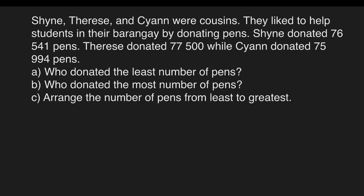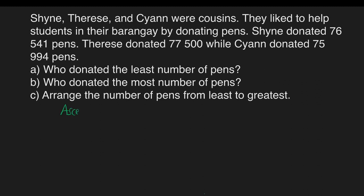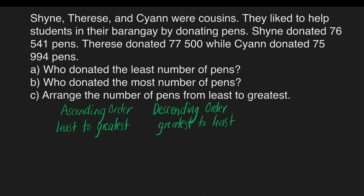When comparing more than two numbers, we can arrange these numbers either in ascending or descending order. Ascending order is from least to greatest, while descending order is from greatest to least.